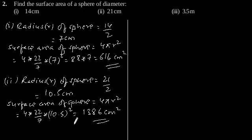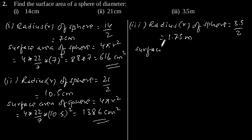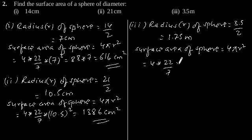Therefore, the surface area of a sphere having diameter 21 cm is 1386 cm². Now the third part: given diameter is 3.5 m, so radius r of sphere will be 3.5 divided by 2, which is equal to 1.75 m. Using the formula of surface area of a sphere, surface area = 4πr², putting the value of r, we will get 4 into 22/7 into 1.75².